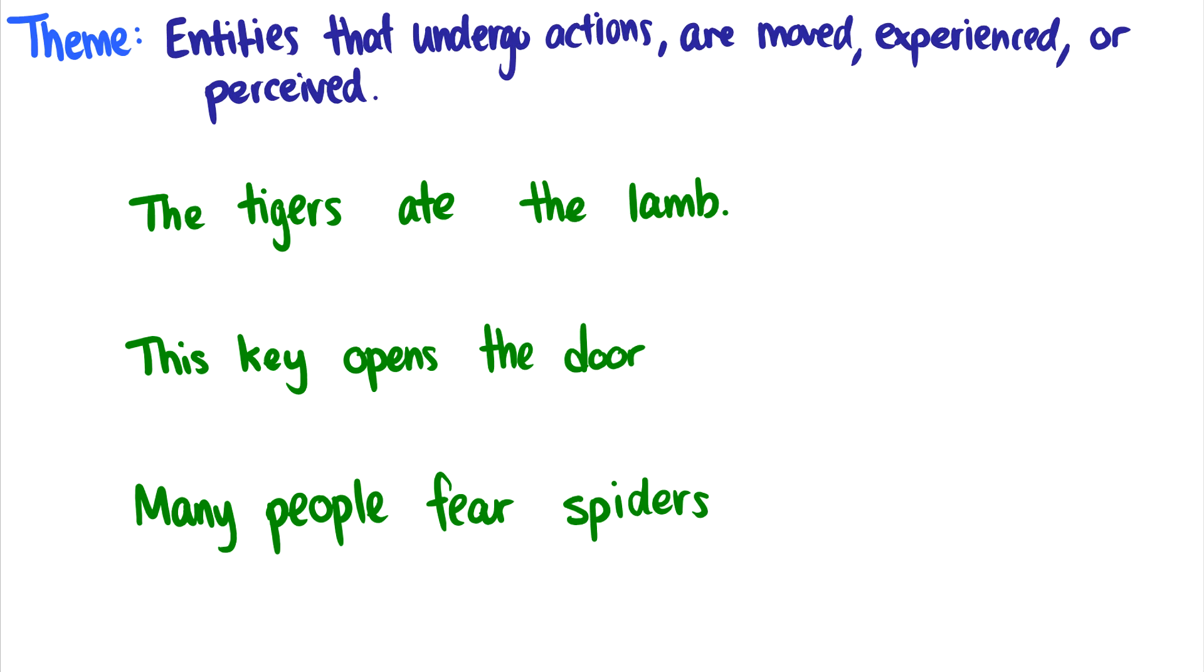The nice description are entities that undergo actions, are moved, experienced, or perceived. In other words, they are the objects of the sentence. That's the best way to put it. Most of the time, theme is going to be an object.